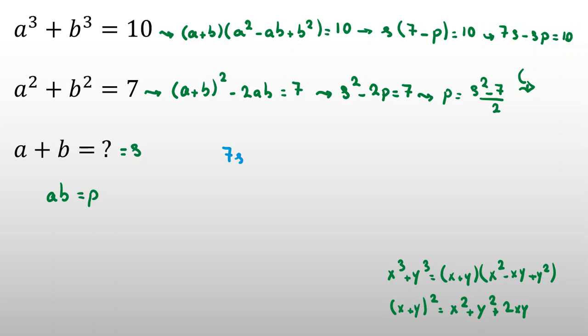If we replace p with (s² - 7)/2, we have 7s - s(s² - 7)/2 = 10. Multiplying both sides by 2: 14s - s³ + 7s = 20.